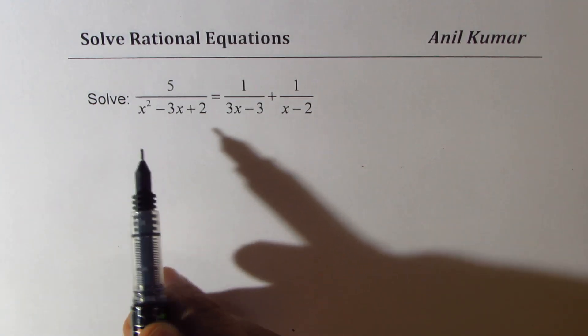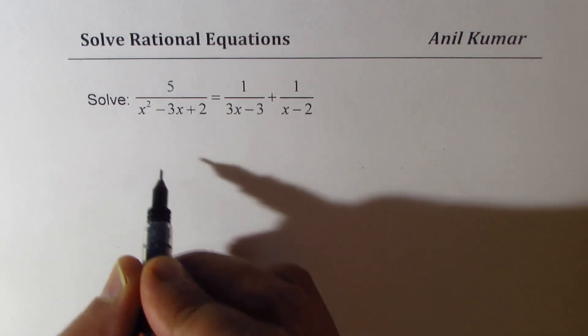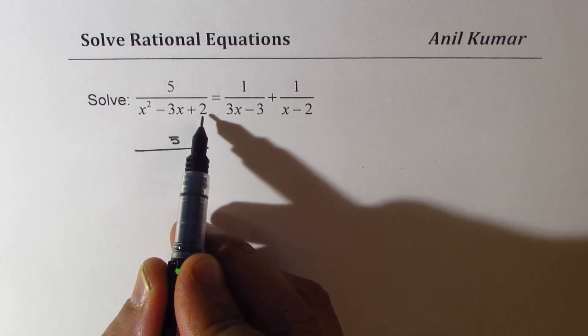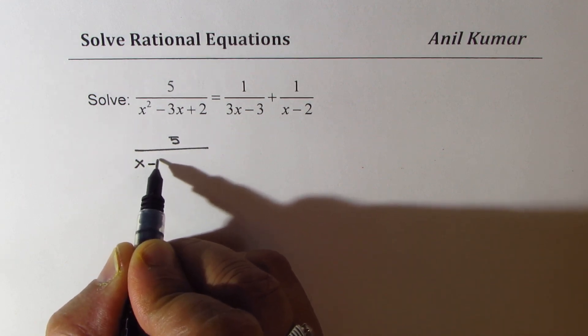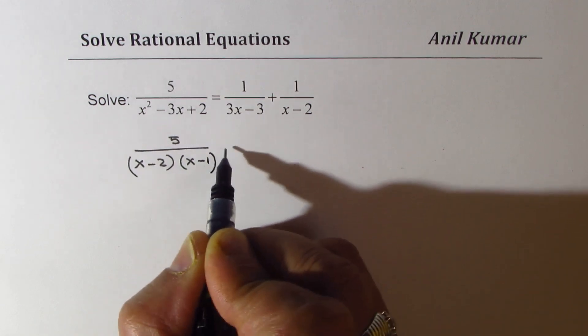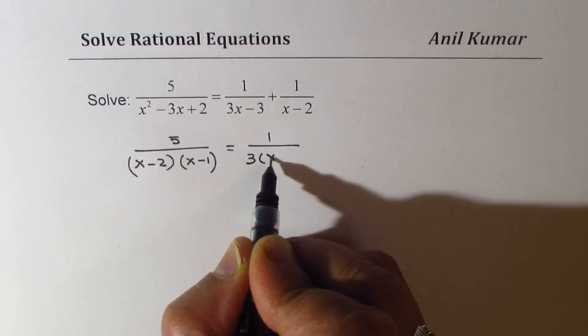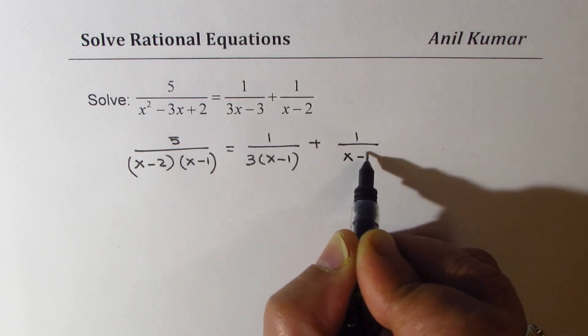Next question is 5 over x squared minus 3x plus 2 equals to 1 over 3x minus 3 plus 1 over x minus 2. Let us factor denominator. So what we get here is 5 over, we are looking for product of 2, sum of minus 3, that gives us x minus 2 times x minus 1. On the right side, we could factor 3, we get 3 times x minus 1, and here we have 1 over x minus 2.